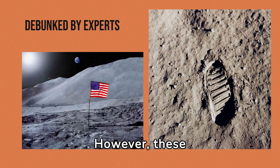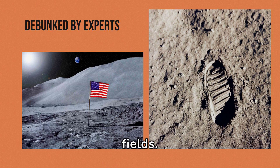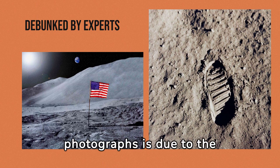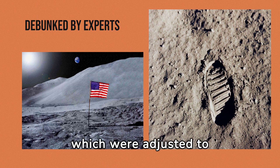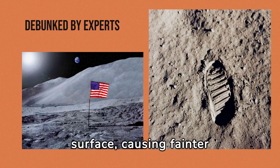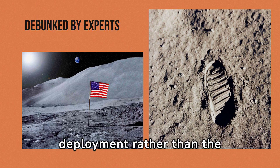However, these claims have been debunked by experts in various fields. For example, scientists have explained that the lack of stars in the photographs is due to the camera's exposure settings, which were adjusted to capture the bright lunar surface, causing fainter objects like stars to be washed out. The appearance of waving in the flag is attributed to the momentum of its deployment, rather than the presence of wind.